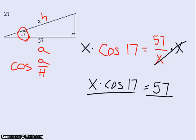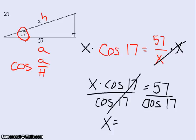So to get the X alone, since the cosine of 17 is multiplying the X, we'll do the inverse and divide. The cosines of 17 on the left cancel, and when you do 57 divided by the cosine of 17 in your calculator, you get 59.6.